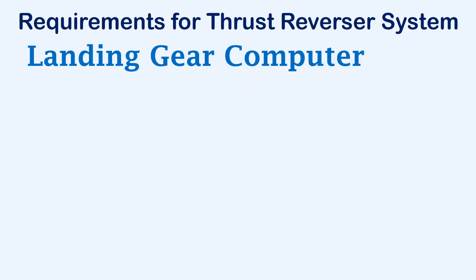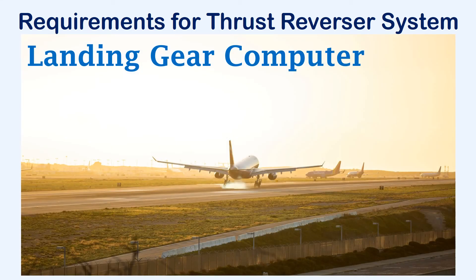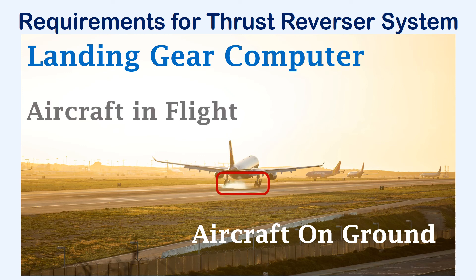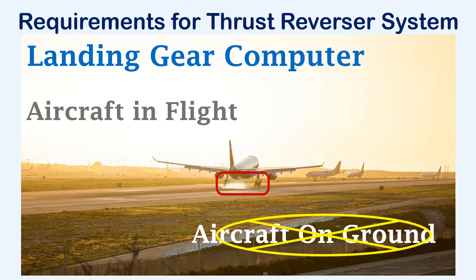The thrust reverser deployment also depends on the landing gear computer. The landing gear computer has to send a signal that the main landing gears have touched the ground, because the thrust reverser should be used only when the aircraft is on the ground. So if reverse thrust is selected when the aircraft is in flight, the landing gear computer will sense that the landing gear has not touched the ground and will not allow the thrust reverser to deploy.